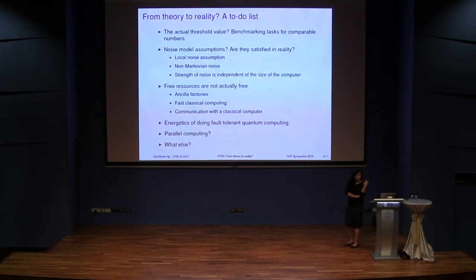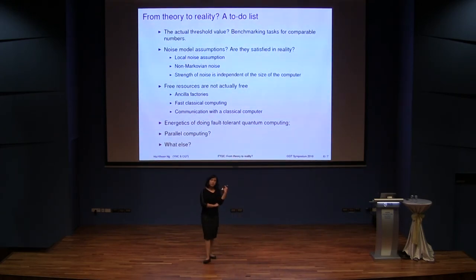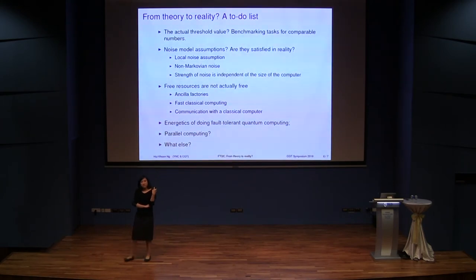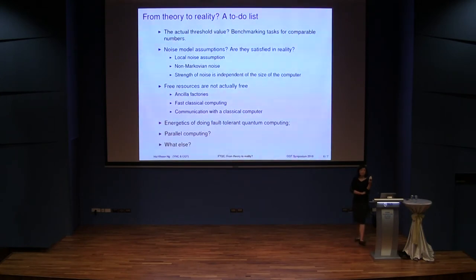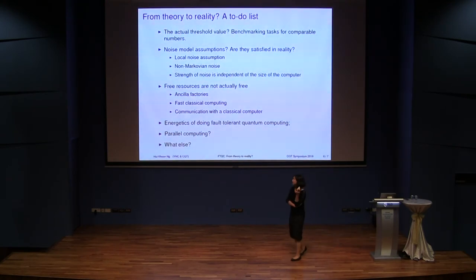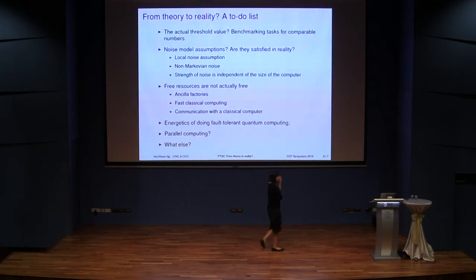Free resources are not actually free. Many of these threshold calculations and proofs were invented when the question was not about practical feasibility, but whether it was even physically possible in principle to build quantum computers. Because of that, many proofs assume things like an infinite flow of clean ancillas, an infinitely fast classical computer, and free classical communication with hardware outside the quantum computer. Many of these things are swept under the rug in fault-tolerance proofs and calculations, and we need to think carefully about them when actually building these systems in the lab.